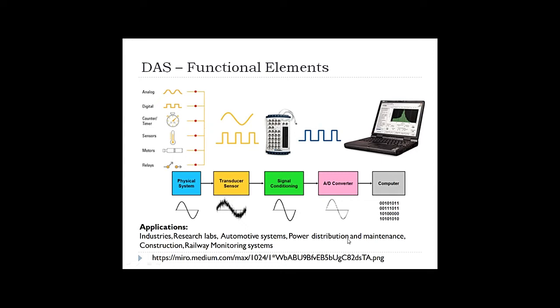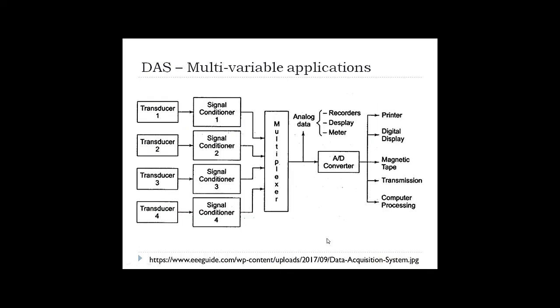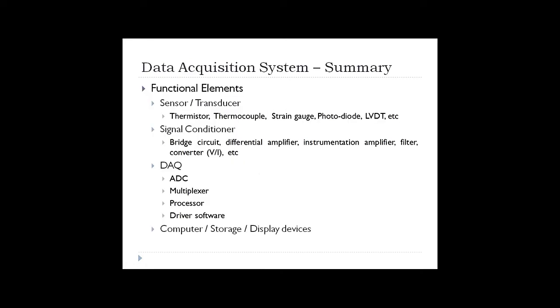This schematic shows a data acquisition system for a multi-variable system, wherein we are interested in monitoring more than one physical parameter. We need a multiplexer to select one of the channels out of the transducer outputs, and we have the display and storage devices. To sum up, the functional elements include a sensor or transducer, a signal conditioner, data acquisition hardware, computer, storage and display devices. A few examples of sensors or transducers include thermistor, thermocouple, and strain gauge.